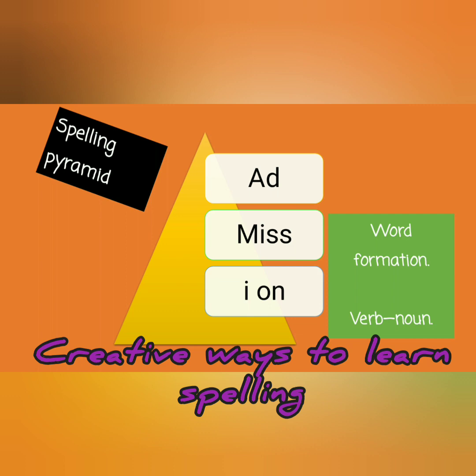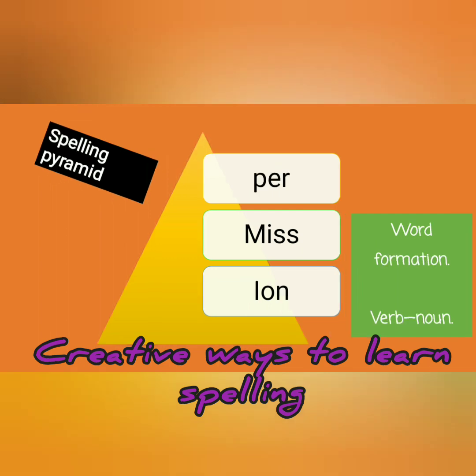You can see a pyramid image before you. I have split the word into three parts: 'ad', 'miss', and 'sion'. In grammar, as you know from word formation — converting verb forms to noun forms — I have split out the word into three parts: 'ad', 'miss', and 'sion'. This is how you can learn the spelling of the word 'admission'.